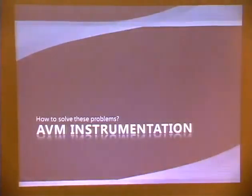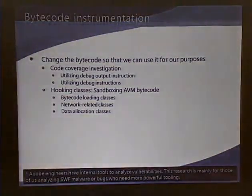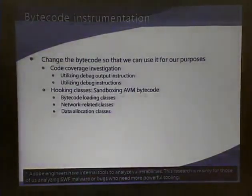All the methods are done with AVM instrumentation. I'm going to show two methods here. One is code coverage investigation, and the second one is hooking classes. You can hook some AVM-supported APIs and replace the API with your own. You can hijack every network traffic or byte-code loading classes or data allocation classes. If you hook the data allocation classes, you can hook all the memory allocation activities from the Flash file and see how they use heap spraying.